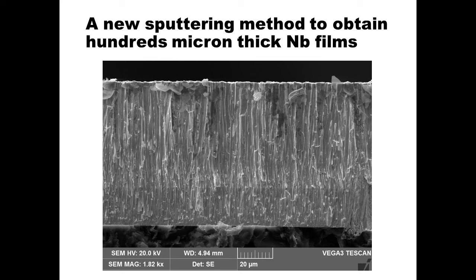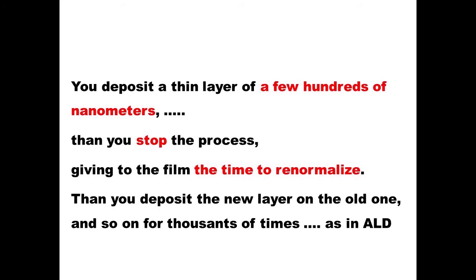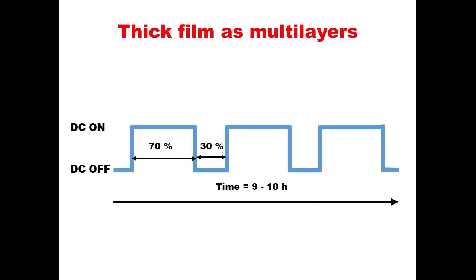The idea is that if zero-stress films are only possible at a specific thickness, a multi-layer of thousands of zero-stress monolayers will also be a zero-stress film. We tried this approach and it works — we can achieve films hundreds of microns thick showing no stress. The process involves depositing a thin layer of a few hundred nanometers, then stopping the process for 30% of the time to allow the film to relax and self-anneal, then depositing a new layer on top, repeating thousands of times as in atomic layer deposition. We built an automated program that switches voltage up and down with a normalization time fixed at 30%.